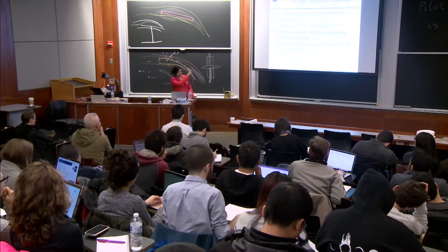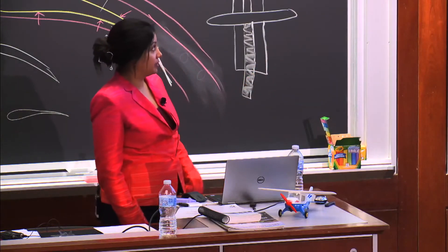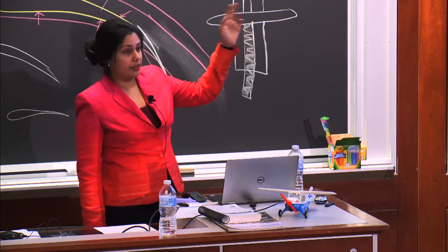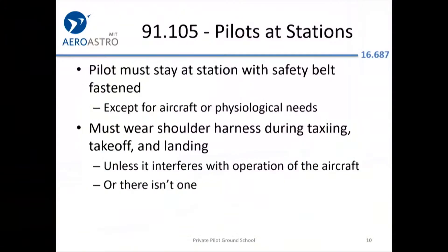The numbers at the top are FAA regulations. FAR 91.105 is a regulation about pilots sitting in their seat when flying the airplane. For all practical purposes, when you're flying, you have to sit down and be the pilot — this isn't like a big commercial jet where you get up and walk around.